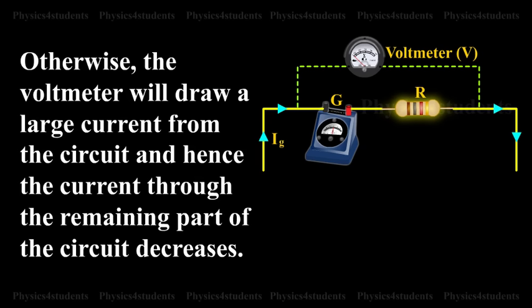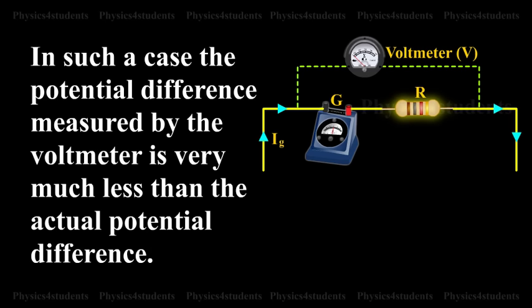Otherwise, the voltmeter will draw a large current from the circuit and hence the current through the remaining part of the circuit decreases. In such a case, the potential difference measured by the voltmeter is very much less than the actual potential difference.